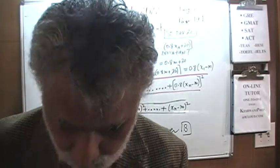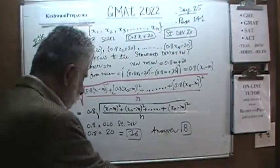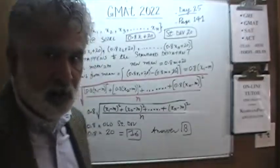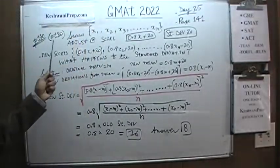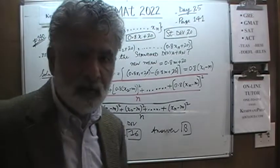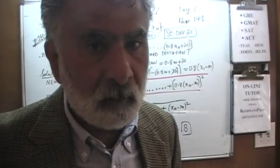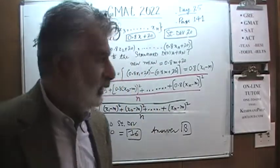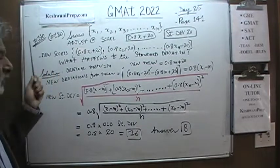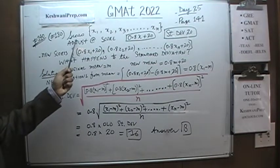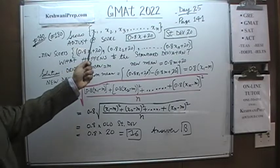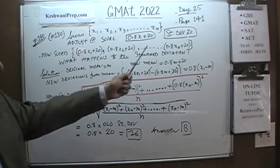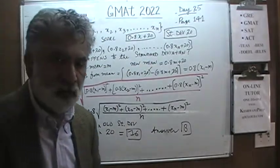Today we'll solve some problems on page 141, but before we get there, on the previous page 140, there was problem number 180 that we left behind. I skipped it because it involved too much writing on the blackboard. We are told that an exam was given and the students' scores are x1, x2, x3, reading up to xn. We are further told that the standard deviation of those scores is 20.